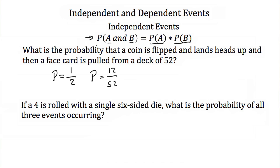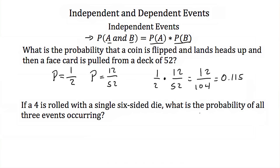What's the probability of them both happening? We take one half and multiply it by 12 over 52. If you do this you'll get 12 out of 104. In decimal form, that's about 0.115. So the probability of getting heads and pulling a face card is 0.115, or about 11 and a half percent.